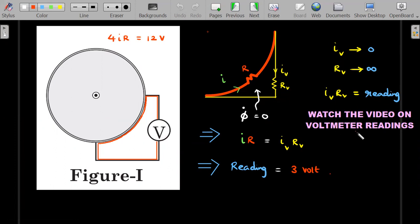Reading of voltmeter is always equivalent to i_v into r_v, which was extensively explained. Because this flux is totally zero, this ir and this i_v r_v's magnitude should be equal to each other; they should cancel out each other. Therefore, the reading itself is ir, which is 3 volt from this particular aspect. So for Figure 1 in this arrangement, it reads 3 volt.